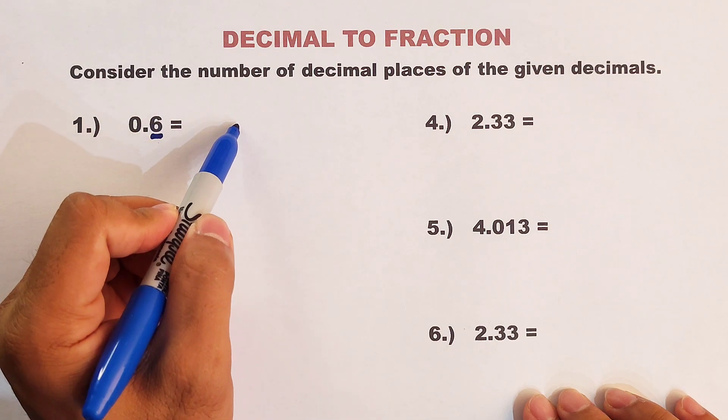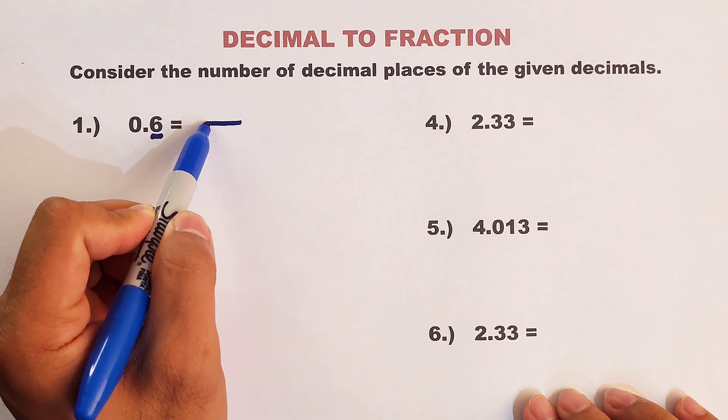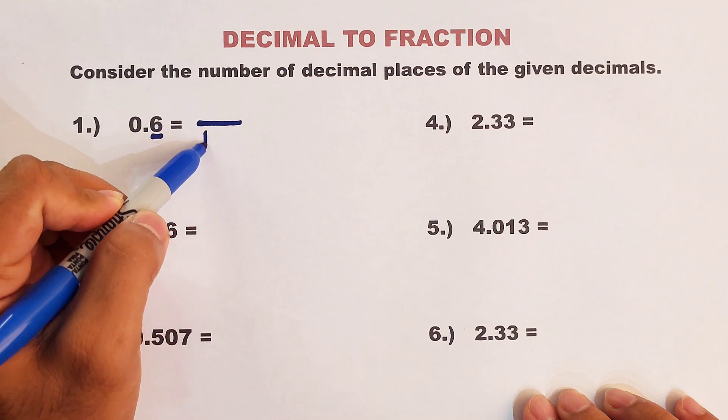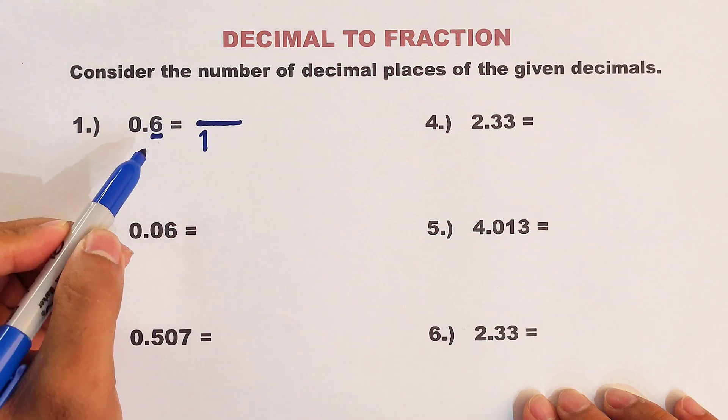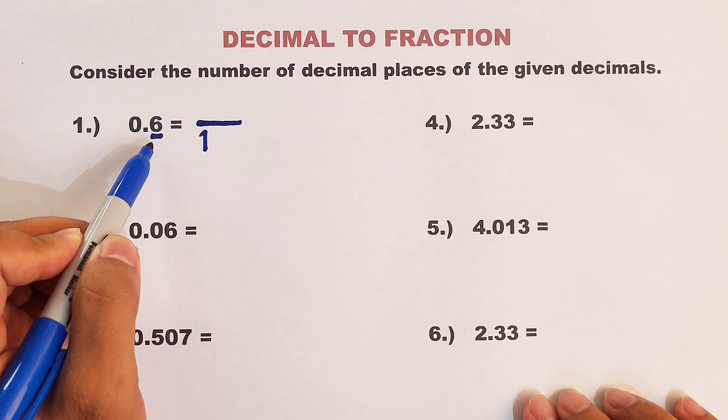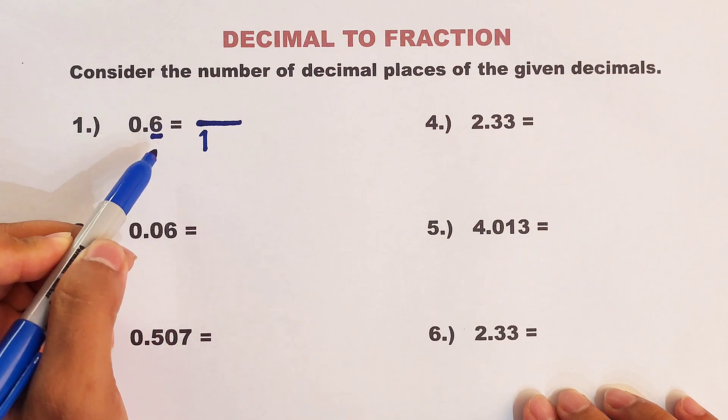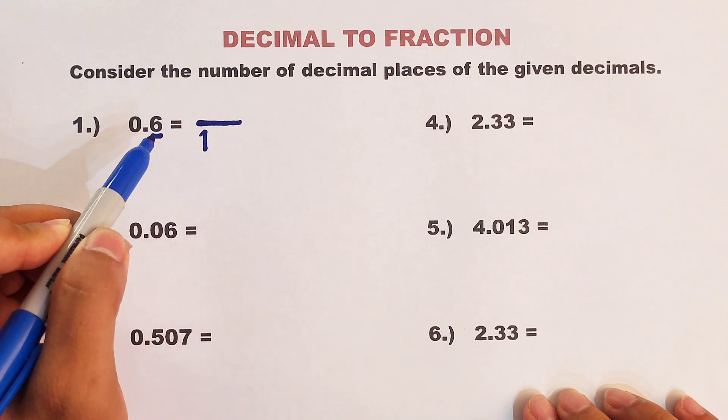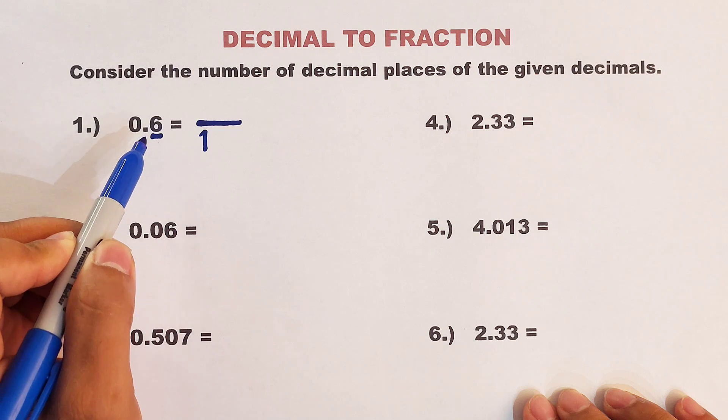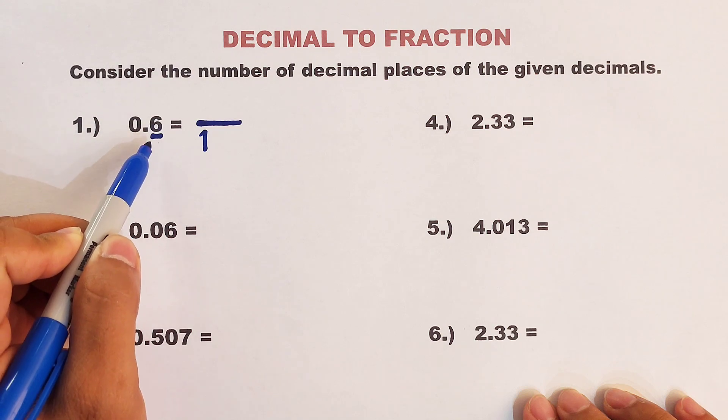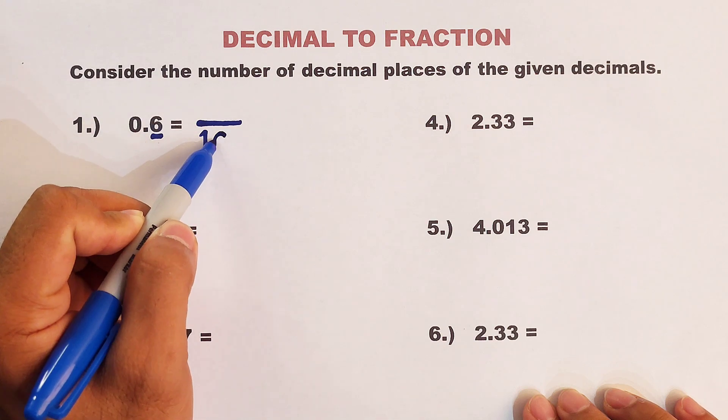So what does it mean? Our process is that we will put a number one here, and then the count of decimal places will be the number of zeros in your denominator. Since we have a single decimal place, we will put a single zero here.